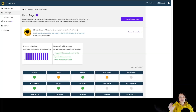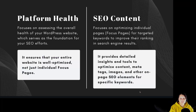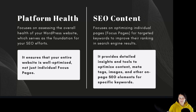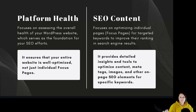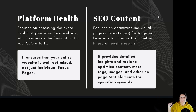Now let's go into more detail about the differences between the two. Platform health focuses on assessing the overall health of your WordPress website, which serves as the foundation of your SEO efforts. SEO content focuses on optimizing individual focus pages for targeted keywords to improve their rankings in search engine results. Platform health ensures your entire website is well optimized — not just individual focus pages — while SEO content provides detailed insights and tools to optimize content, meta tags, images, and other on-page SEO elements for specific keywords.